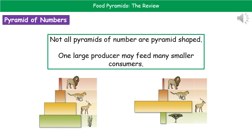One thing to bear in mind is that when we're drawing a pyramid of numbers, they're not always going to be pyramid shaped. We may find that we've got one large producer, like a tree, which can then feed many smaller consumers. So while some will be pyramid shaped, others will not be. Just trust the numbers you're given in the question and draw it as it says.